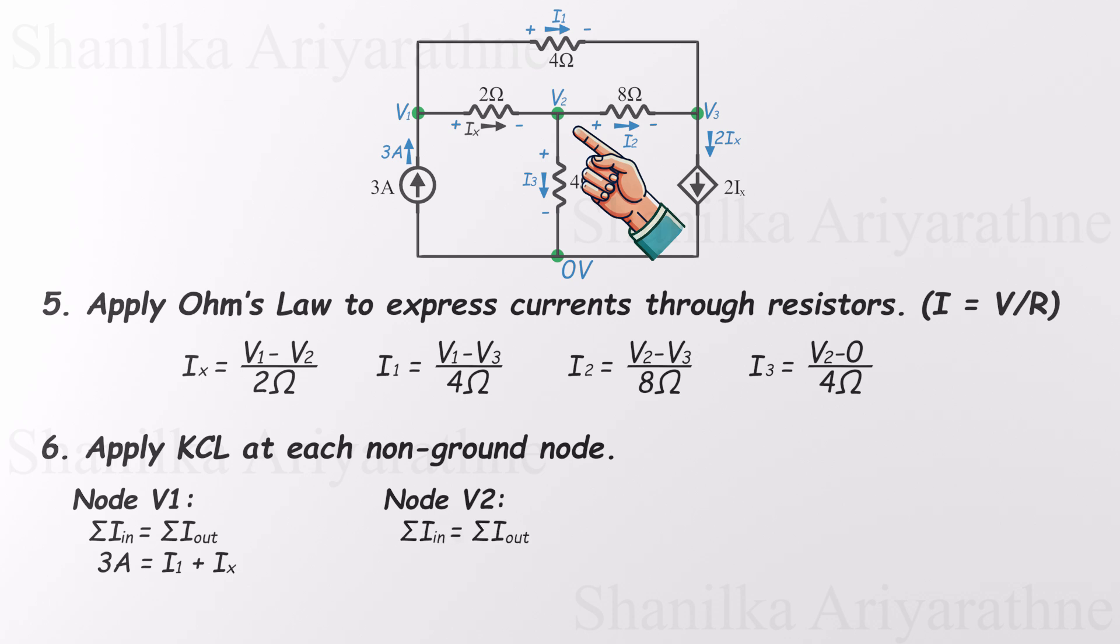At the second node, current IX flows in, while I2 and I3 flow out. That gives us IX equals I2 plus I3. Finally, at the third node, both I1 and I2 flow in, and 2 times IX flows out. So the equation is 2 times IX equals I1 plus I2.